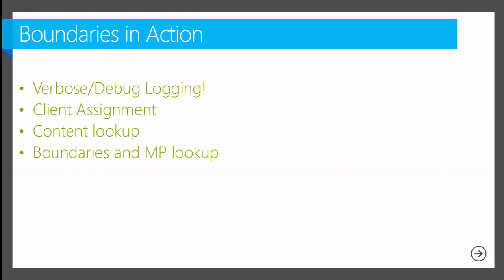A few things we're going to go through — the first thing that's important as I get into the lab is verbose and debug logging. For content lookup, it's going to be much easier to figure out what's going on if you have verbose and debug logging turned on. For those who are veterans with Config Manager, it's probably familiar. For verbose and debug logging, I prefer to have it on in every environment — the overhead is so minimal on modern hardware, disk-based consumption is so minimal. I'd rather have it turned on and available when a problem happens than have to turn it on, recreate the problem, and then go look at it.